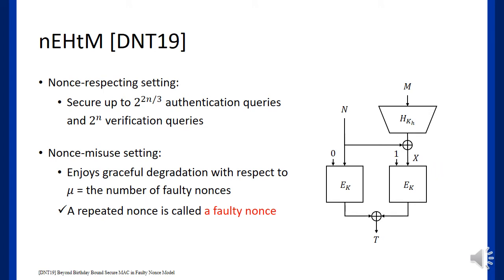Nonce-based enhanced hash-then-mask MAC, nEHtM, is the construction in this slide. It is proposed by Dutta et al. in Eurocrypt 2019. nEHtM seems to have similar security bounds to EWCDM or rEWCDM, but actually has better security since it achieves graceful degradation in the nonce-misuse model. When we consider graceful degradation, we denote mu as the number of repeated nonces, which are also called faulty nonces.